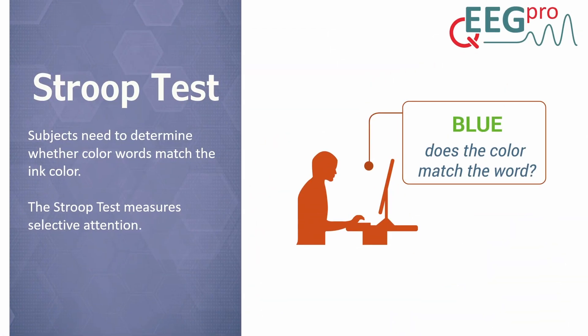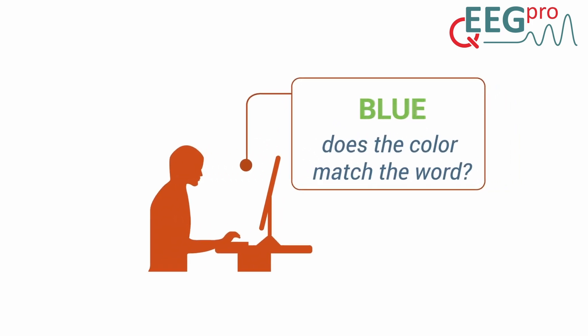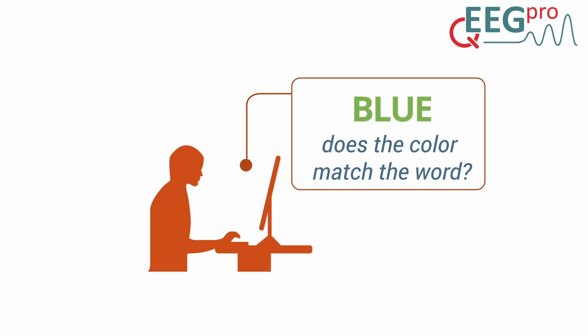The next test we'll address is the Stroop Test. In the Stroop Test, words referring to a color are presented on the screen, like blue, green, and red. In the congruent condition, the ink color of the letters matches the word, while in the incongruent condition, the ink color of the letters does not match the word. In this example, the word blue does not match the green ink color of the letters, and therefore represents a trial in the incongruent condition. In this version of the Stroop Test, subjects need to decide whether the word matches the color or not.